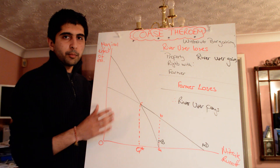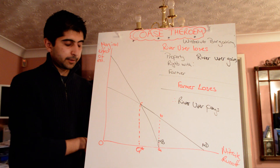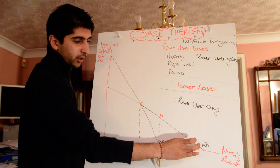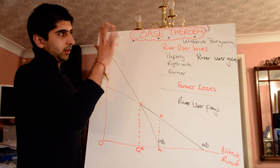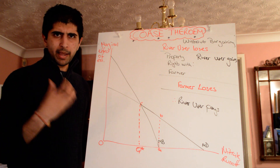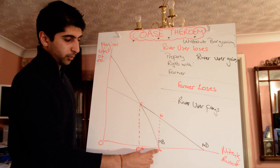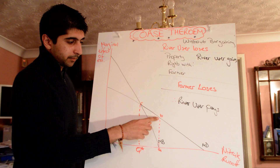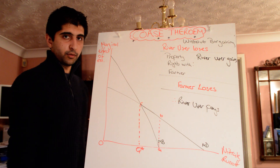In a normal market without property rights or any kind of bargaining, the social optimum will be Q*, where marginal cost equals marginal benefit. However, without bargaining and without property rights, the farmer would choose to produce at point A, maximising his total benefit and his welfare. That means at point B, we can measure the damage that causes to the river user.